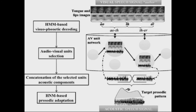The flowchart of the process includes the following steps: first, HMM-based visual phonetic decoding, where HMM stands for Hidden Markov Model; then audio-visual unit selection; next, concatenation of selected units and acoustic components; and finally, HMM-based prosodic adaptation, where HMM here refers to the Harmonic plus Noise Model.